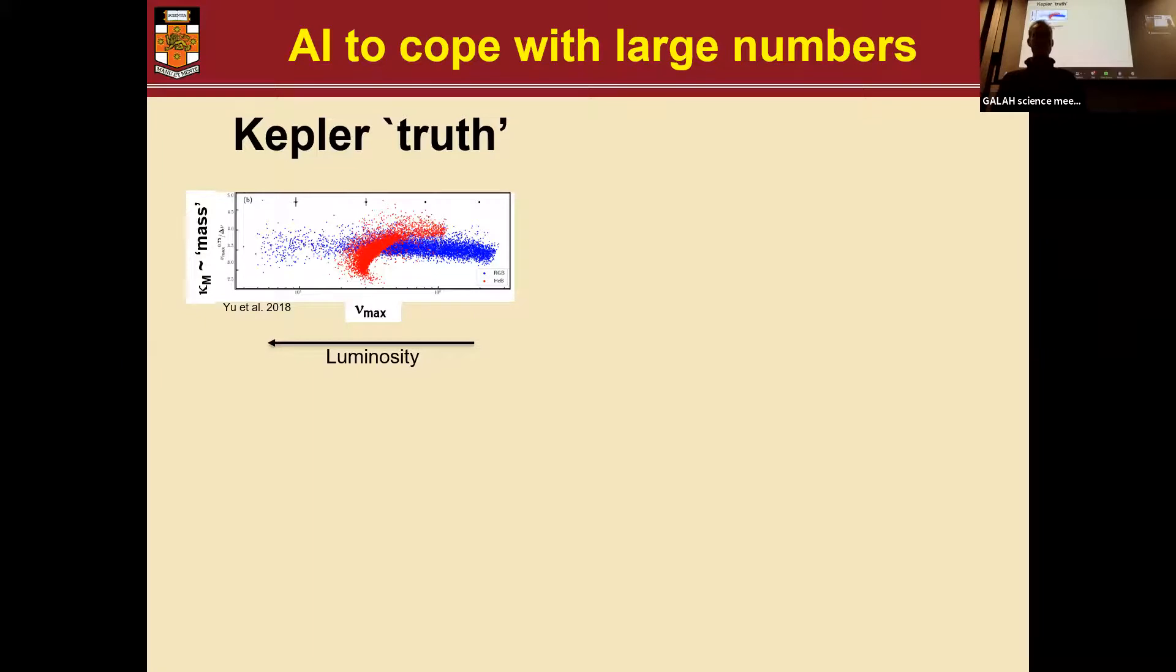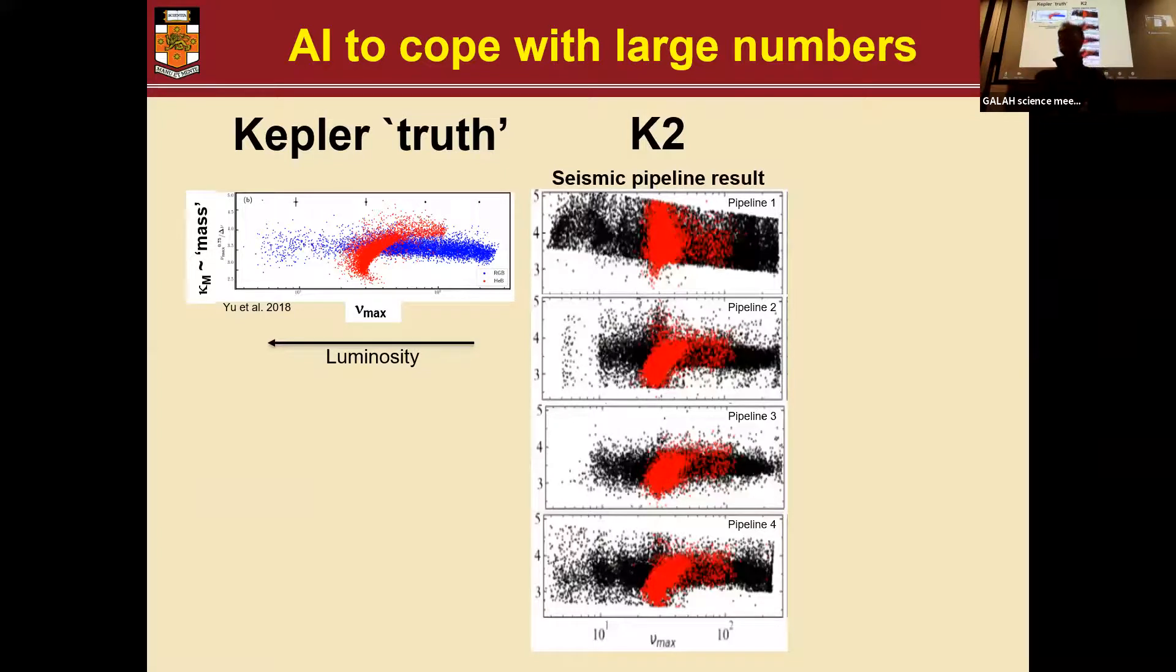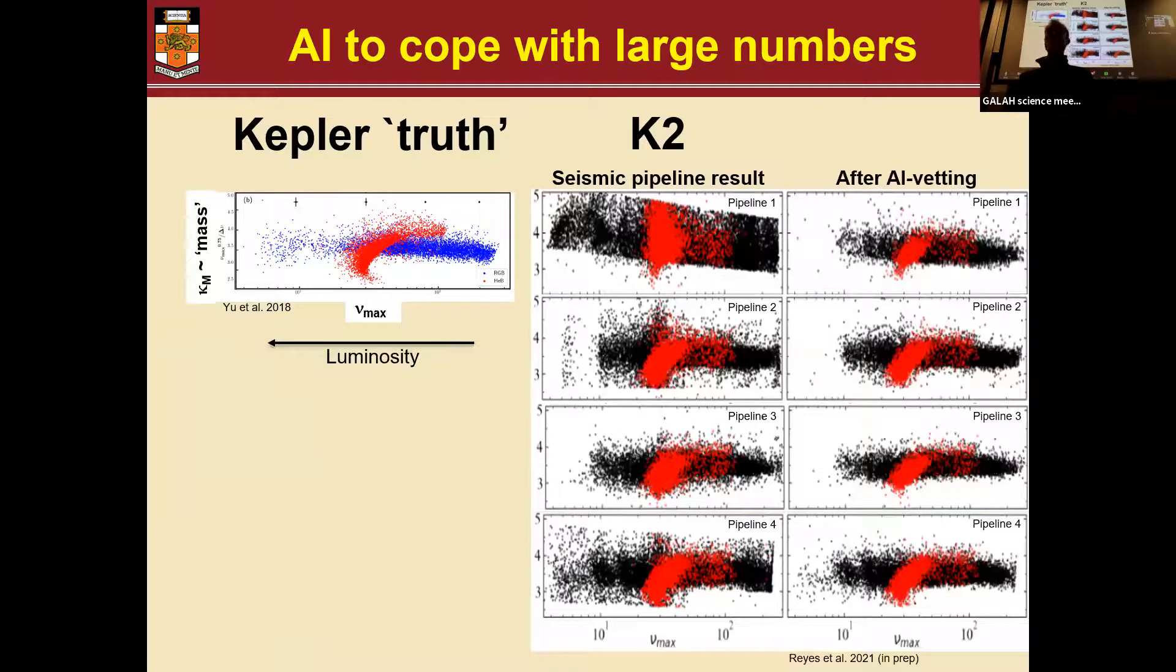Now, if you ask automated pipelines to do the best they can do and give us results of delta nu and nu max for K2, this is what you get. And so typically what we have been doing is we are combining data from different pipelines to get a consensus value, because we don't have time to go through it by eye. But what we have been working on, and this is basically spearheaded by Claudia, who's sitting in the room here, is to make an AI method that does the same job as the expert, looking at the raw data. It doesn't look at this diagram at all. It just looks at the raw data and says, is the result from this pipeline in agreement with what the data shows?